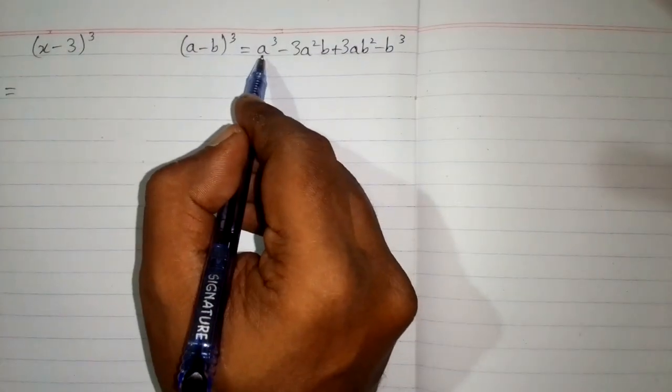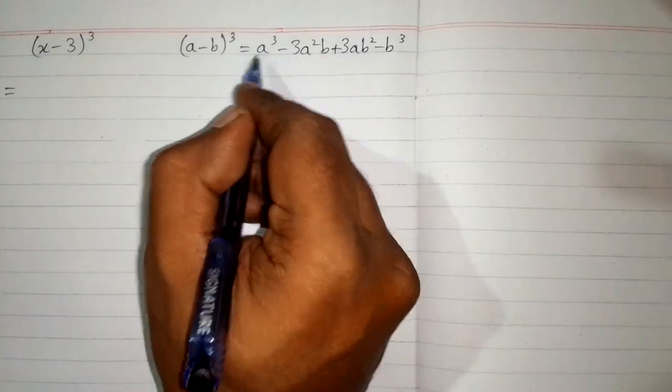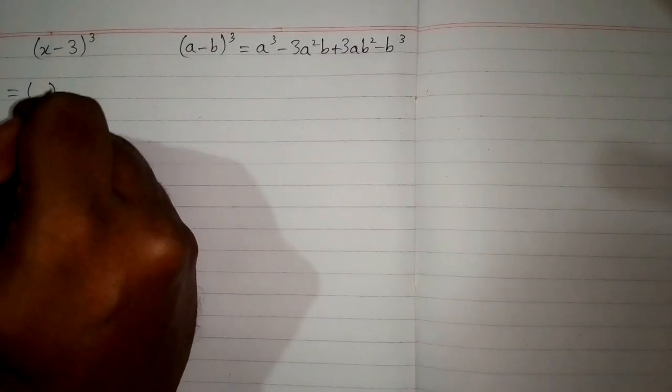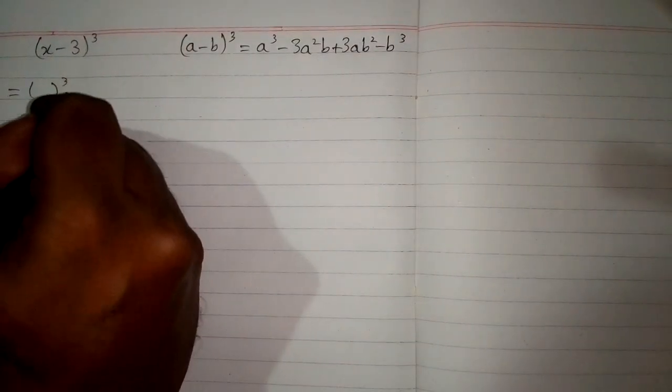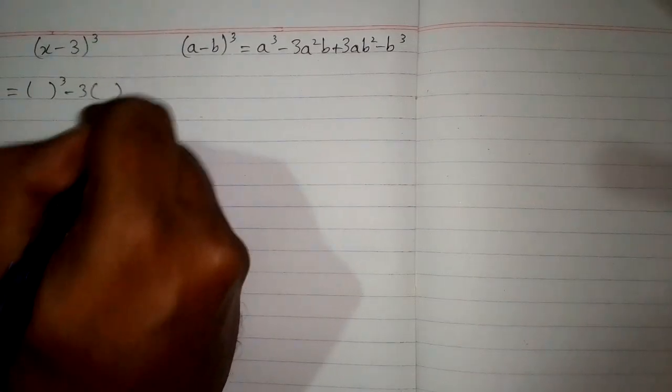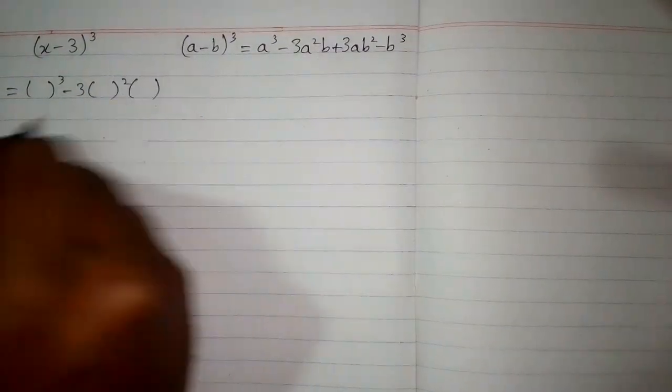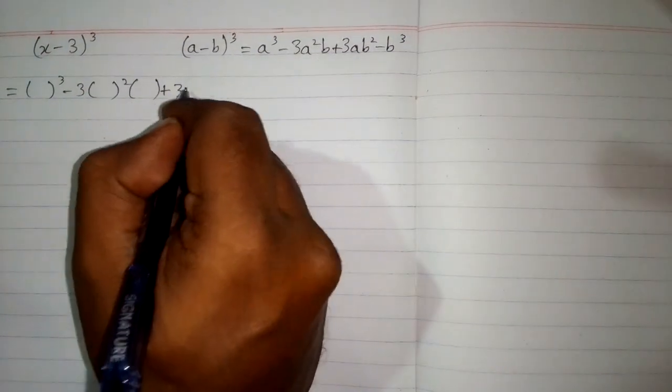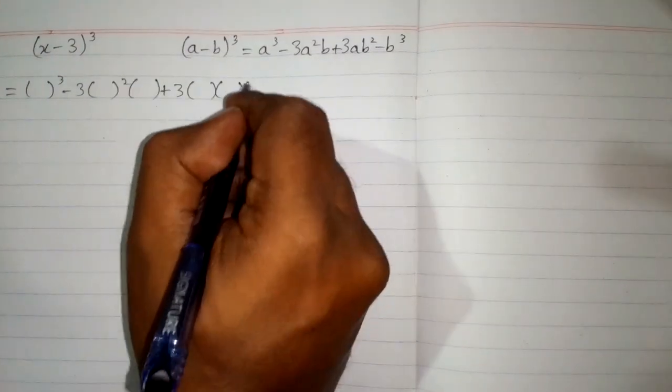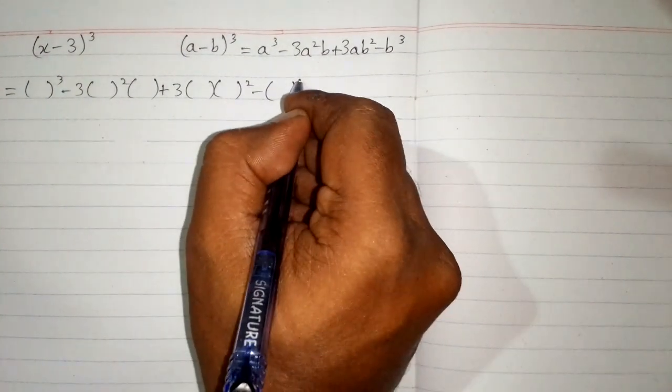We can put brackets in place of a and b in this formula. So this is a³, then minus 3 times a²b, plus 3 times ab², minus b³.